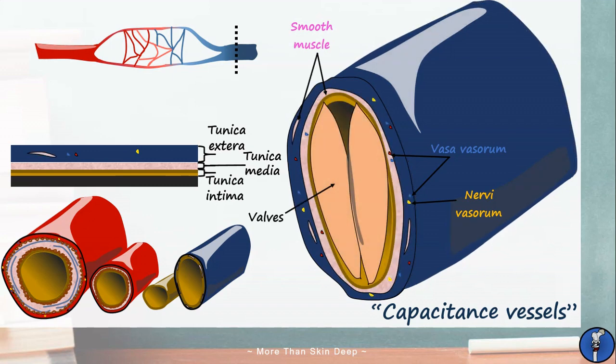Finally some veins especially those in the peripheries have valves which are outpouchings of the endothelium and ensure blood can only travel in one direction. The largest veins are around two centimeters wide which is the same size as the largest arteries. However due to the much thinner tunica media and externa their lumen size is in fact substantially greater.